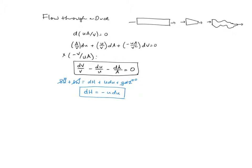We have that expression. Let's do one further thing — use the fundamental relation. Recall that DH = TDS + VDP. Therefore, TDS + VDP = −UDU. So now I have relationships between velocity, pressure, and entropy, and also relationships between velocity, specific volume, and area.